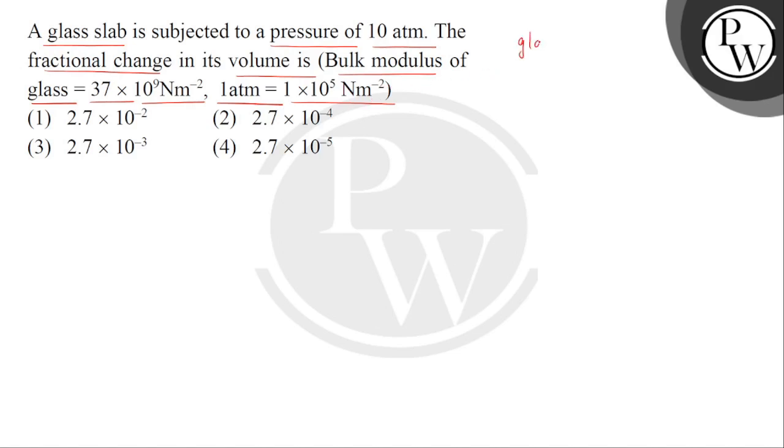So Bichu, the question discusses a glass slab. Pressure is applied on it of 10 atmosphere. Now atmosphere is not an SI unit of pressure, so we will convert it by multiplying by its conversion factor. So we get pressure applied as 10 to the power 6 newton per meter square.